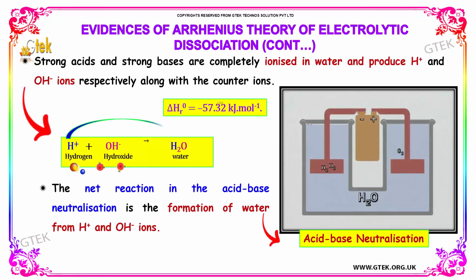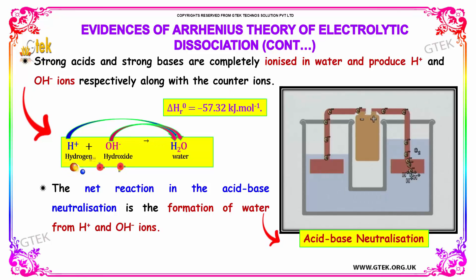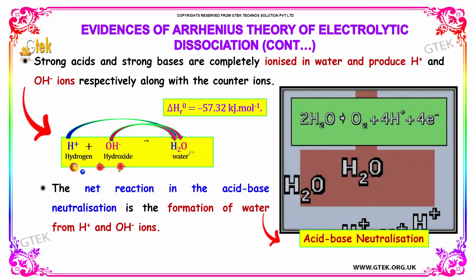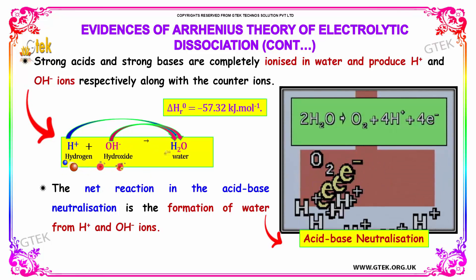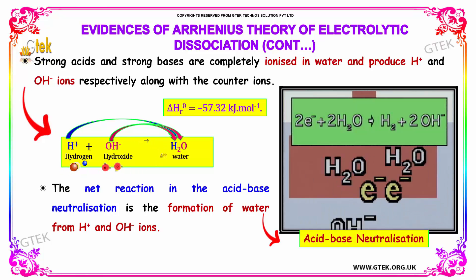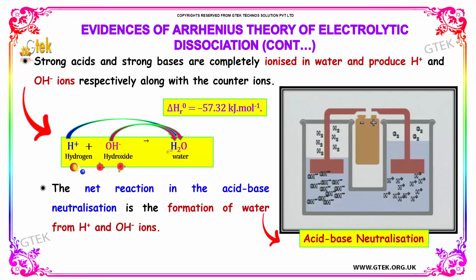Strong acids and strong bases are completely ionized in water and produce H⁺ and OH⁻ ions respectively, along with the counter ions. The net reaction in the acid-base neutralization is the formation of water from H⁺ and OH⁻ ions.